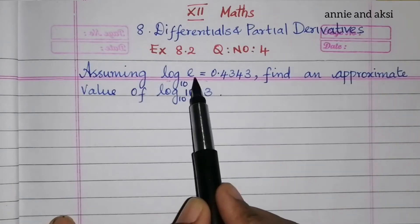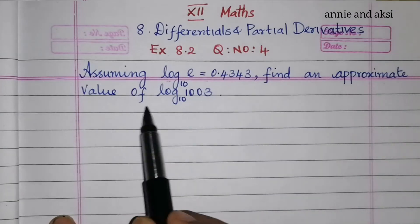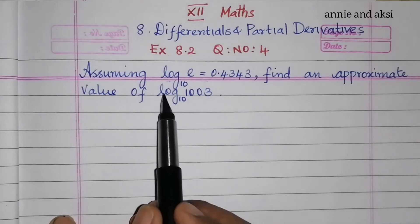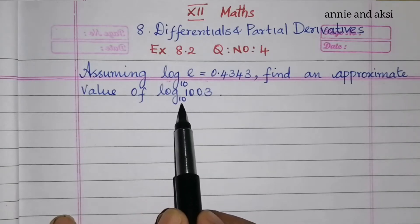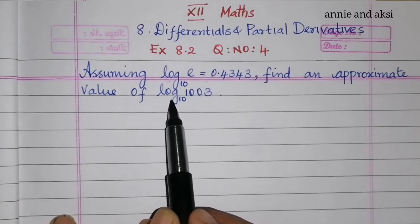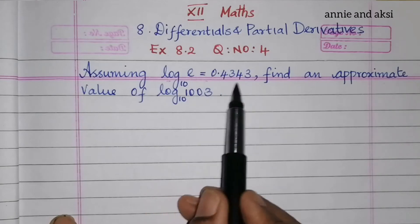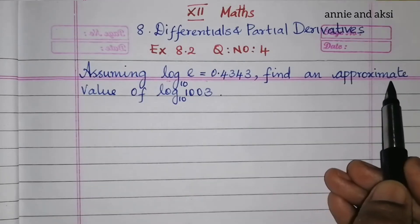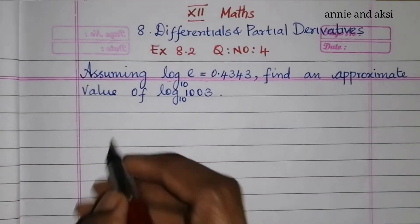Assuming log e to the base 10 is equal to 0.4343, find an approximate value of log 1003 to the base 10. The given value is log e to the base 10 is equal to 0.4343, and we need to find the approximate value of log 1003 to the base 10.